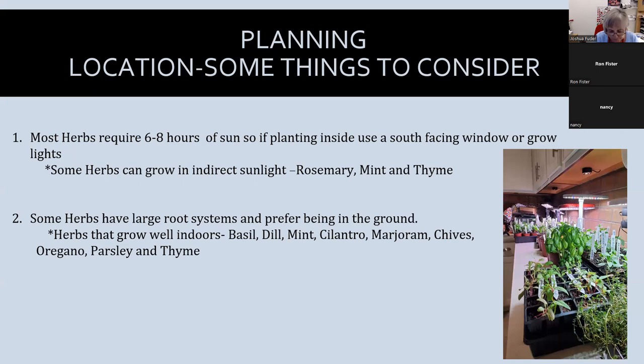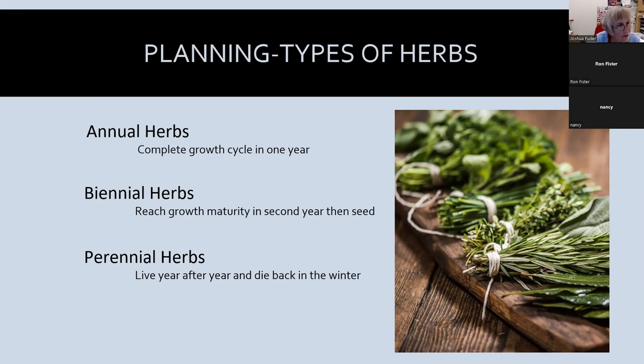Let's talk about different types of herbs — annual, biannual, and perennial. Knowing this matters for garden placement: you want to keep perennials away from areas where you'll be pulling out annuals, like tomato plants. An annual herb completes its cycle in one year. A biannual reaches maturity in the second year, then bolts and goes to seed. A perennial herb lives year after year, dies back in winter, and comes back from the same root system in spring.